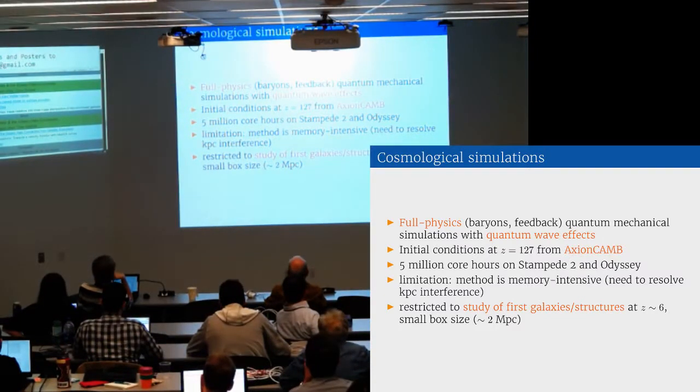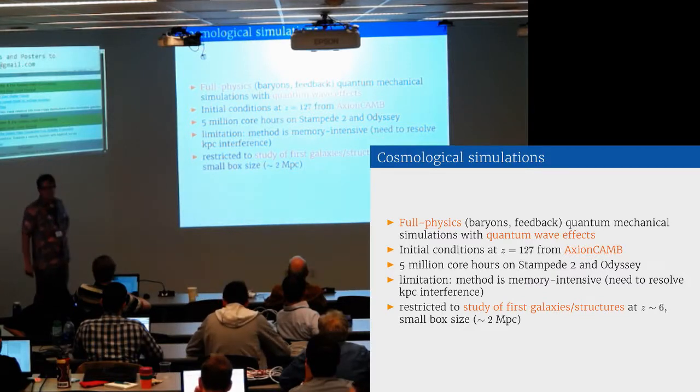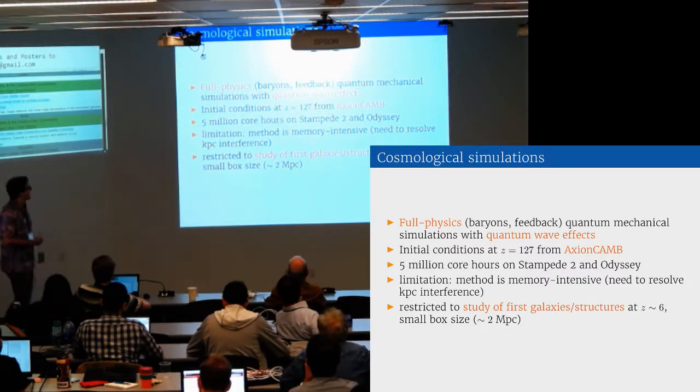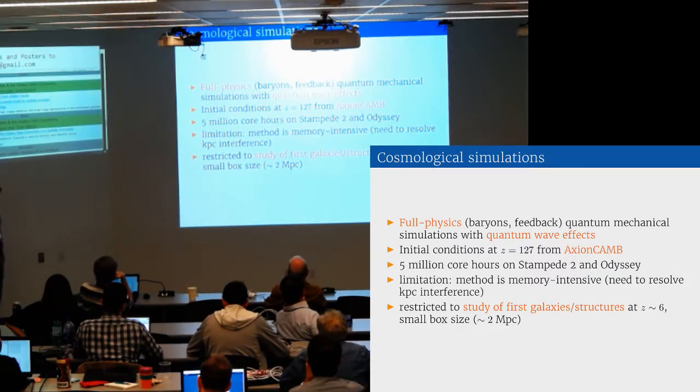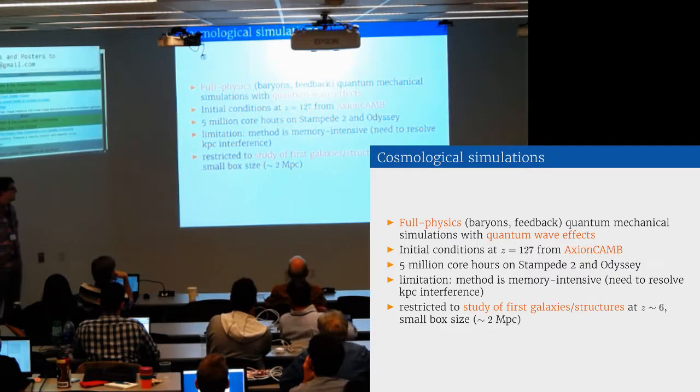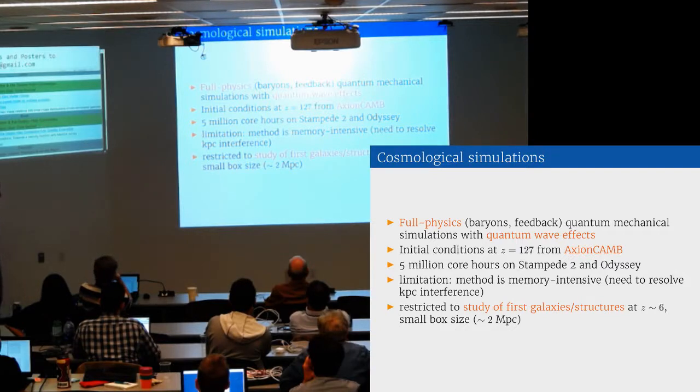These simulations are full physics, baryons coupled to fuzzy dark matter, including all the quantum wave effects in the illustrious feedback physics. We start with initial conditions for the power spectrum generated by axion camp. These simulations use 5 million core hours on Stampede 2. The limitation is that evolving the Schrodinger-Poisson equations is very memory intensive, so we're limited to high redshift and 2 megaparsec boxes here. We're looking at first structures, what would they look like with JWST?